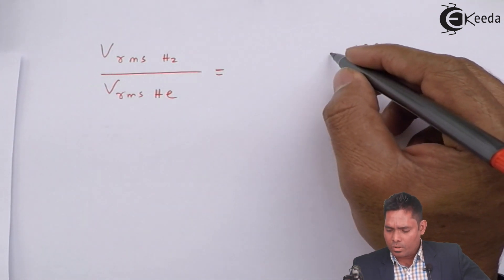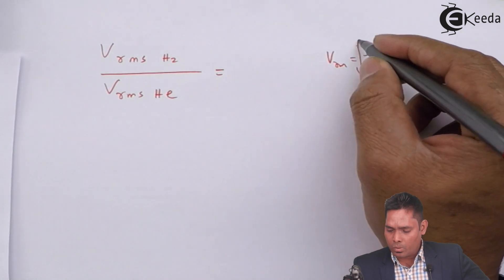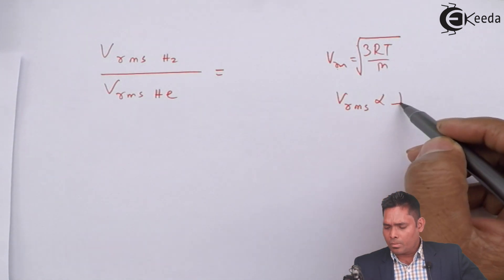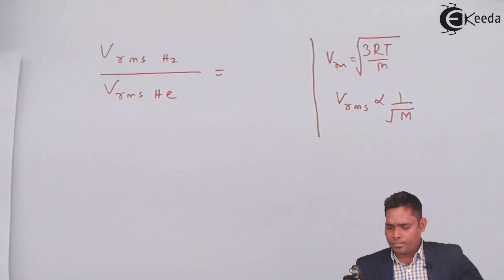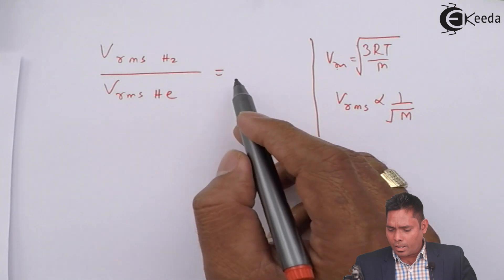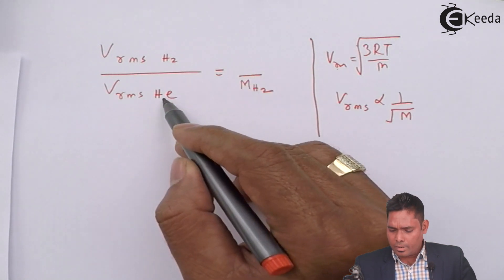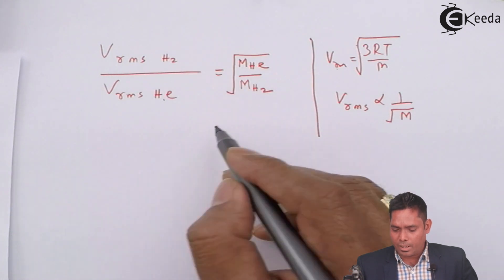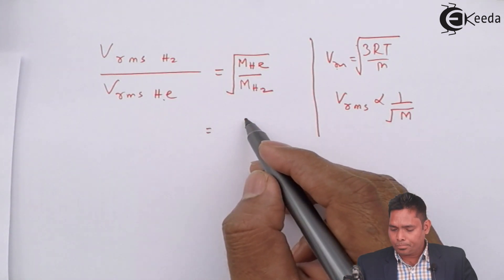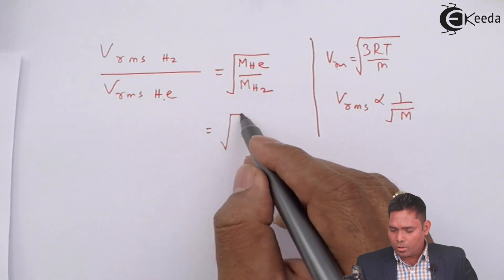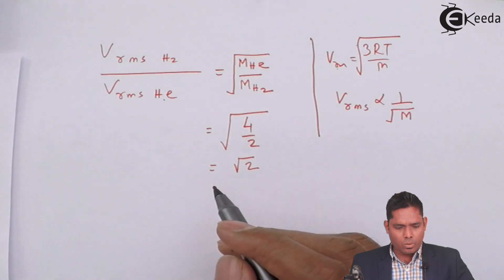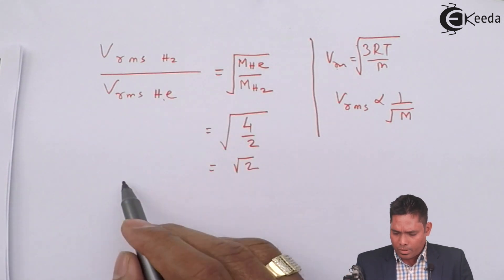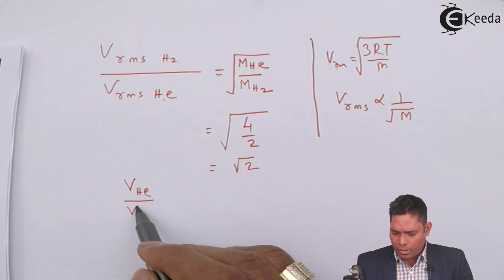This is the formula for Vrms, which is square root of 3RT upon M. Because temperature is same, R is same, 3 is same, so Vrms is inversely proportional to square root of molecular weight. If I use that, helium to hydrogen ratio will have molecular weight of hydrogen over molecular weight of helium under root. Helium molecular weight is 4 and hydrogen is 2. So if I take the root, this is root 2.